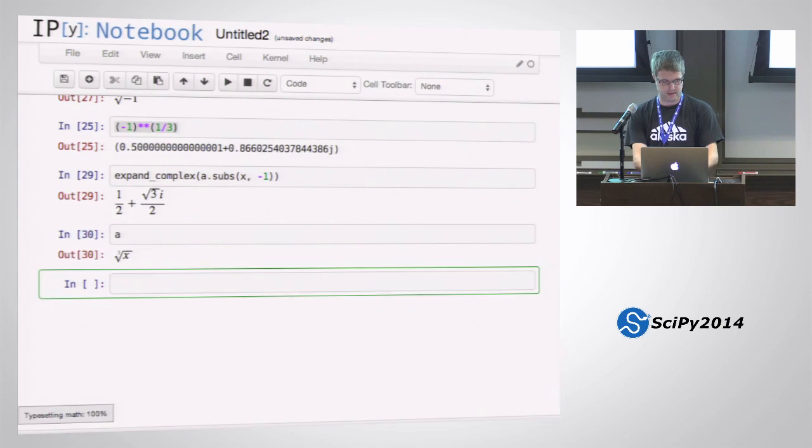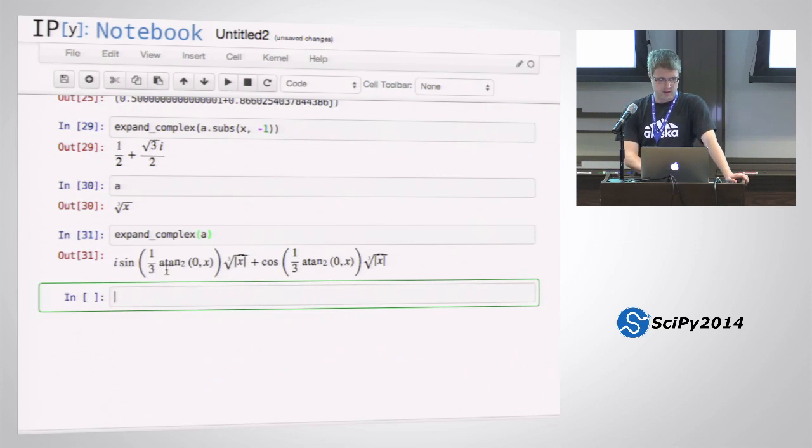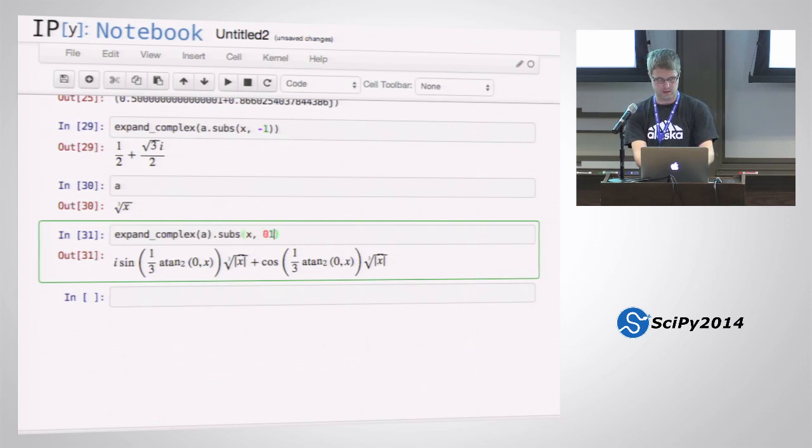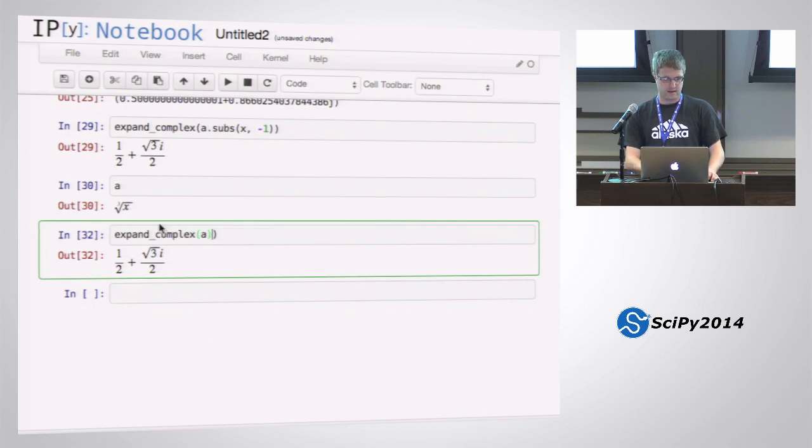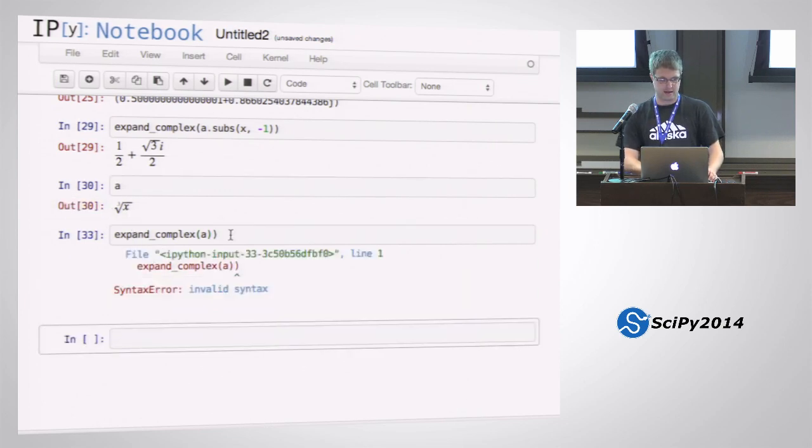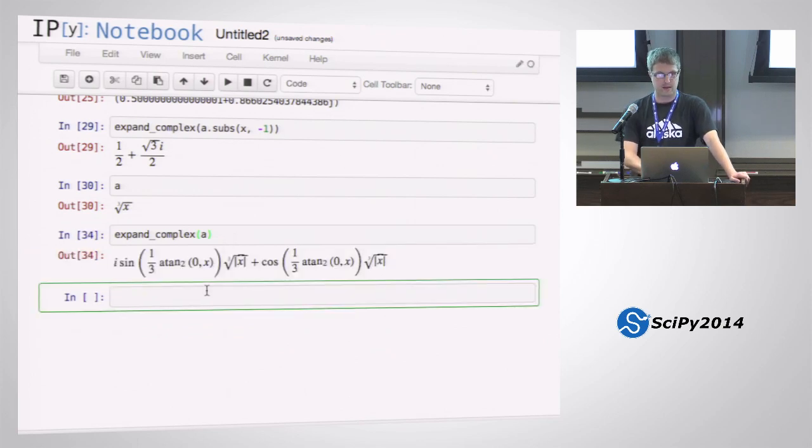If I just do it on with the x in there, I get some crazy thing with arctan two. But assumedly, if I put x equals negative one in here, it'll give me that. So yeah, I guess that would be a third thing that computer algebra systems are good at, is just knowing random formulas for things that you would have to compute by hand and remember how it works. Like, how do I rewrite this as a plus b times i? Maybe if I work at it long enough, I can remember. But SymPy already knows. It's just in there.